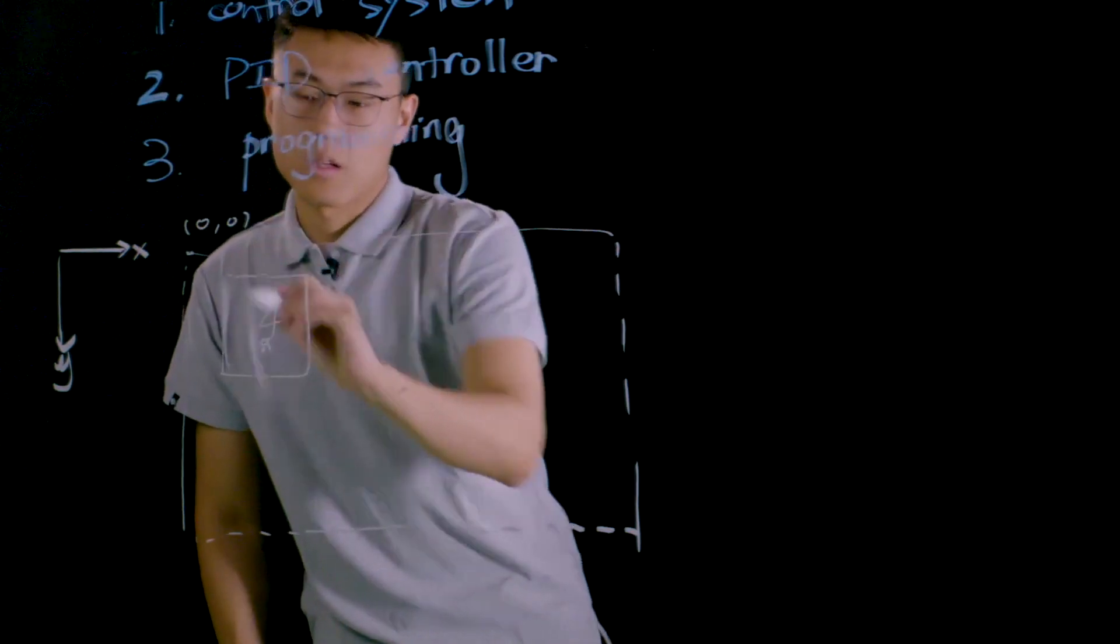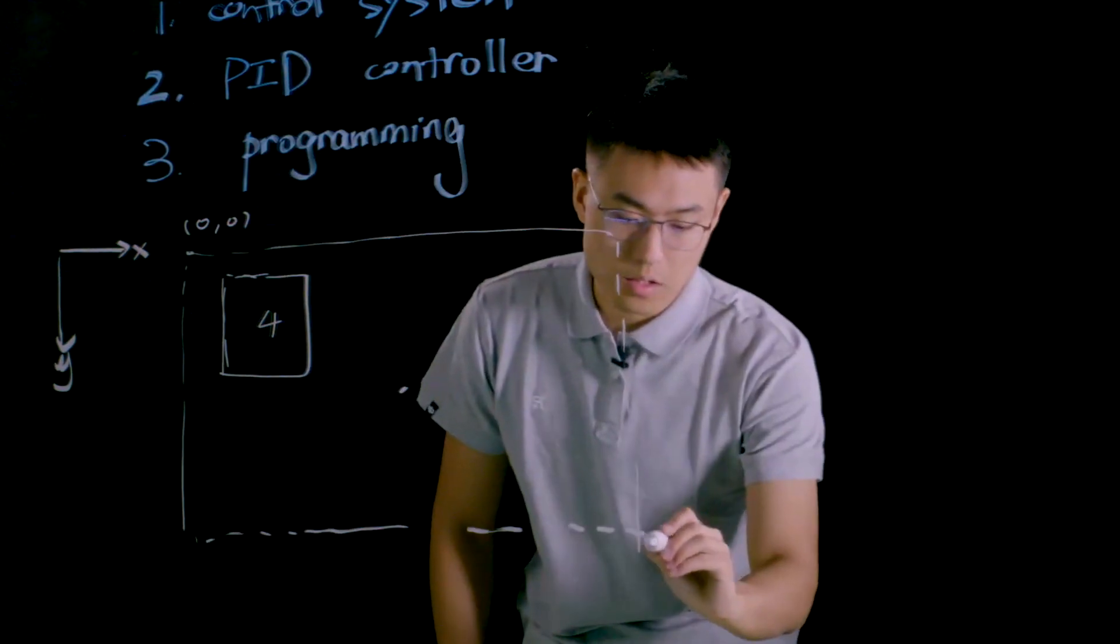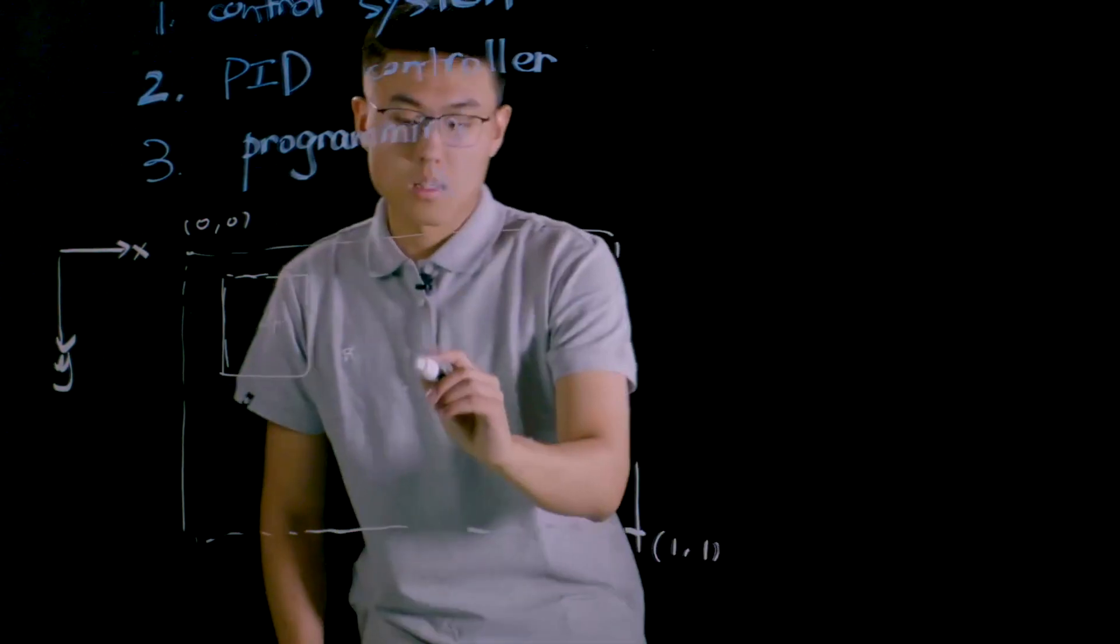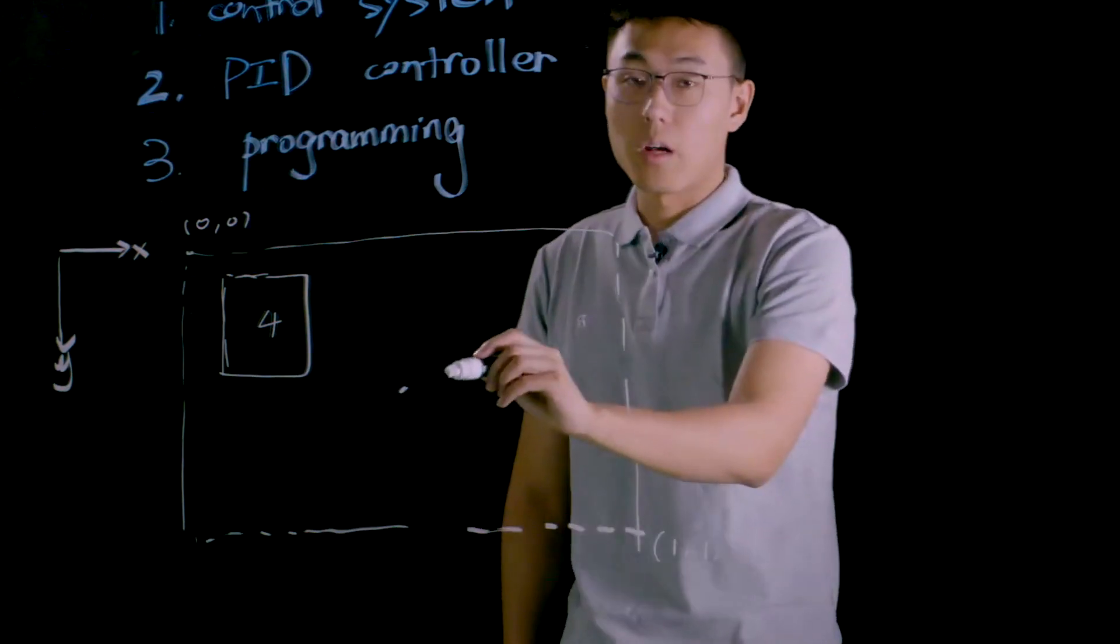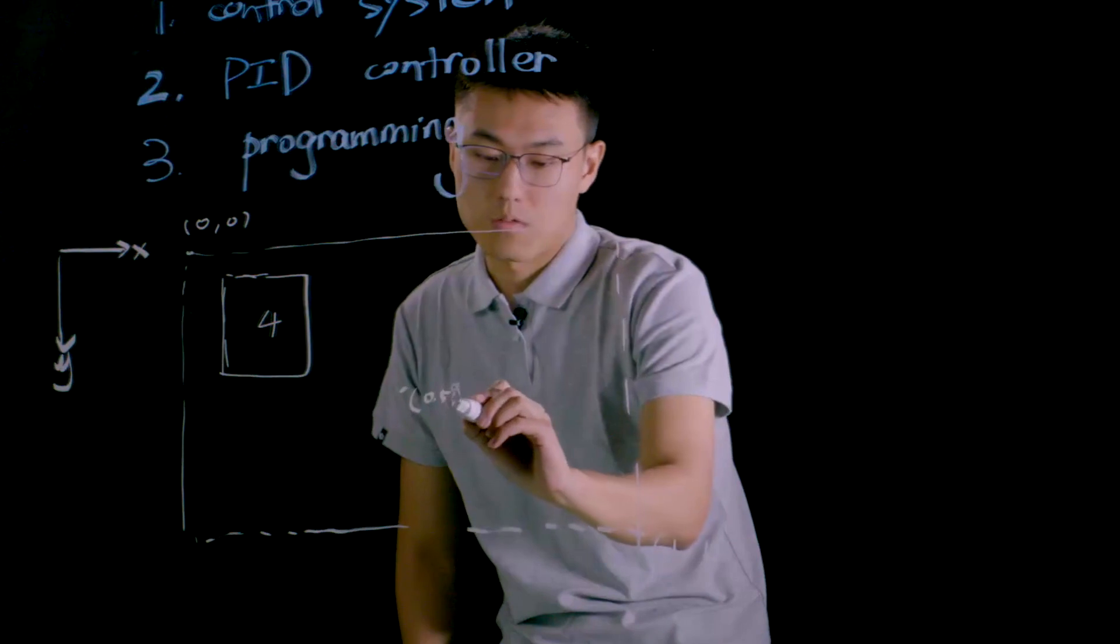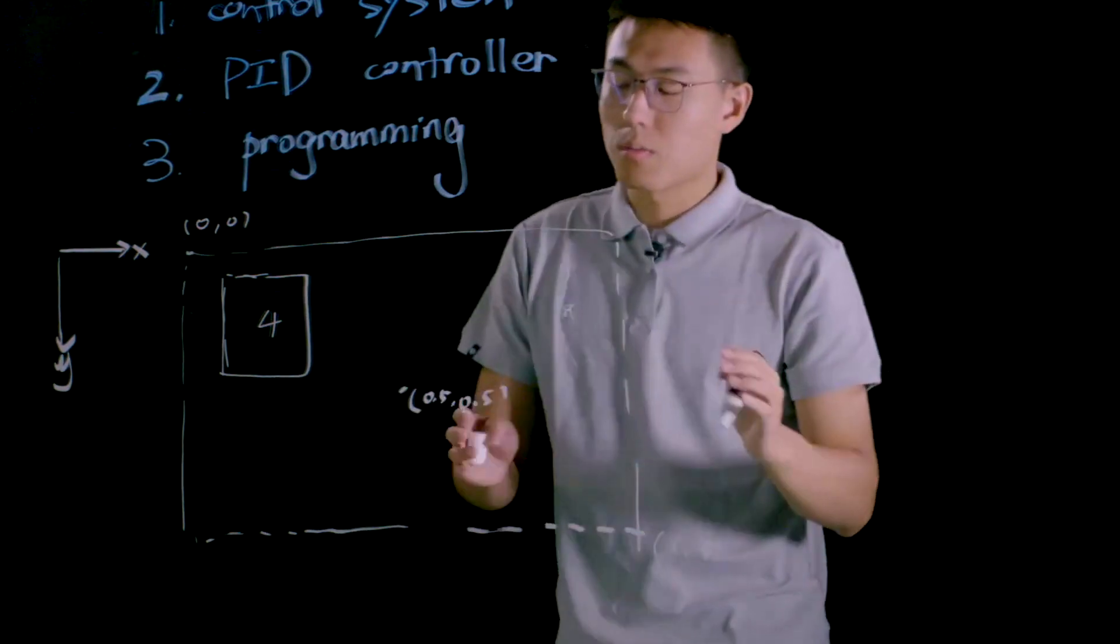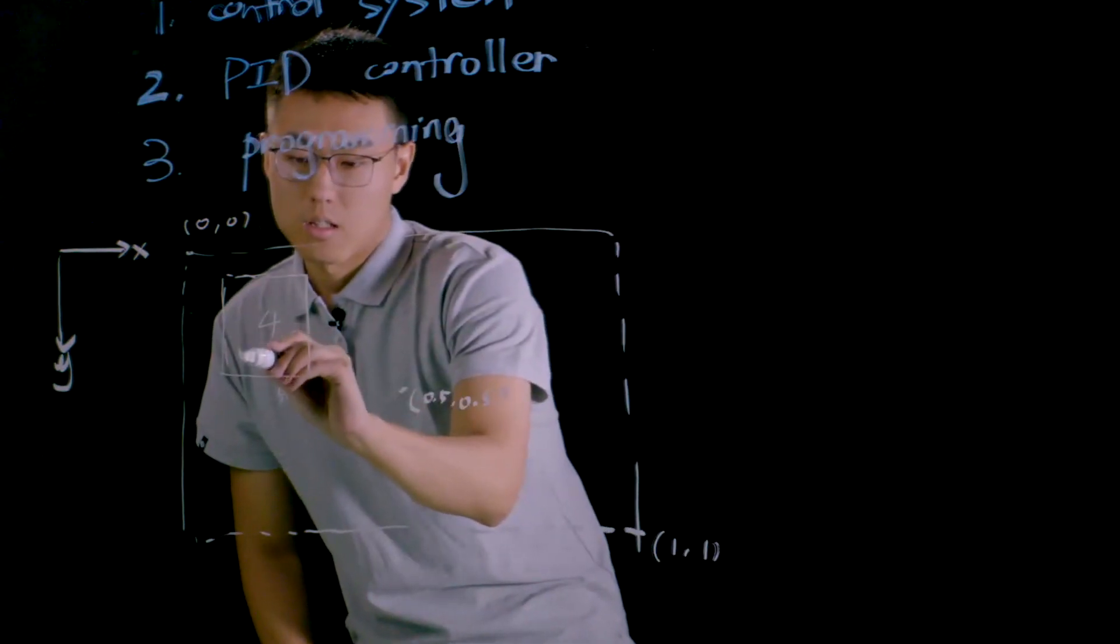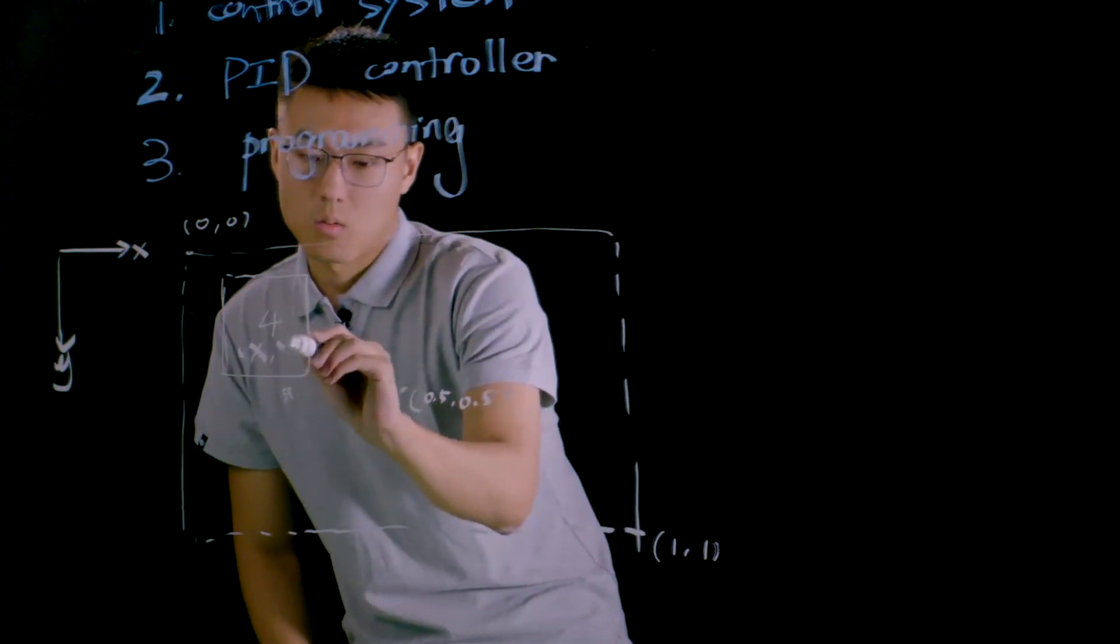0, 0. And this corner has coordinates 1, 1. So since this is the center of the viewport, the coordinate of it is 0.5, 0.5. And since we don't know the position of this visual marker, let's say the coordinate of this visual marker is x, y.